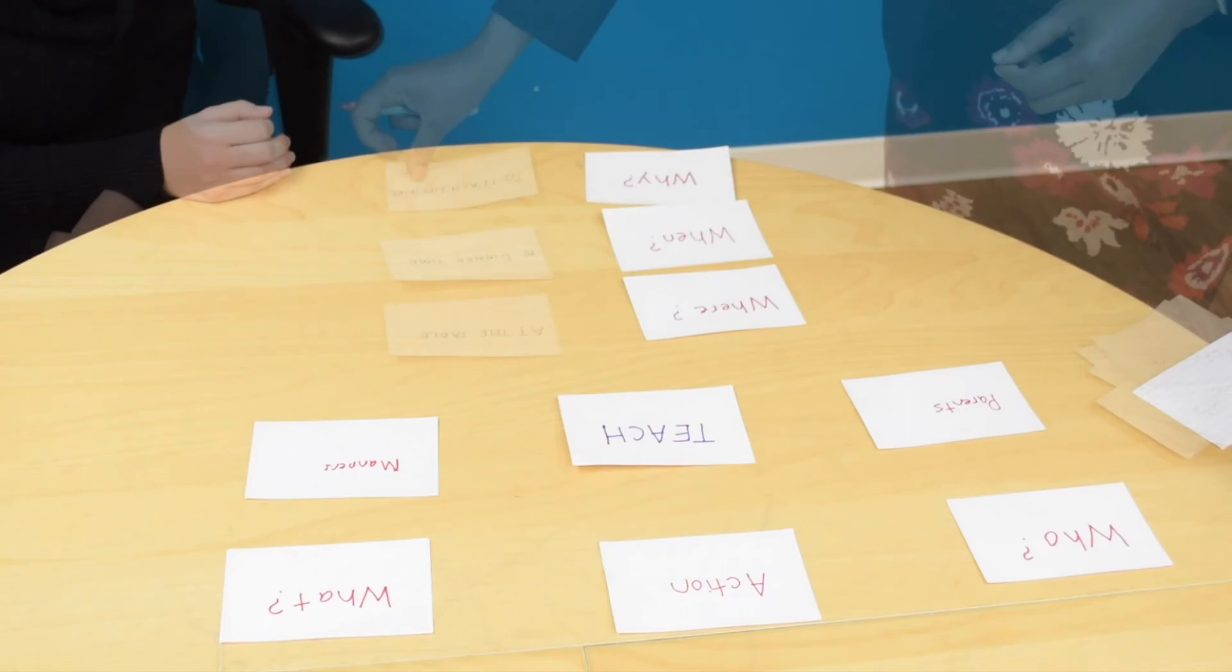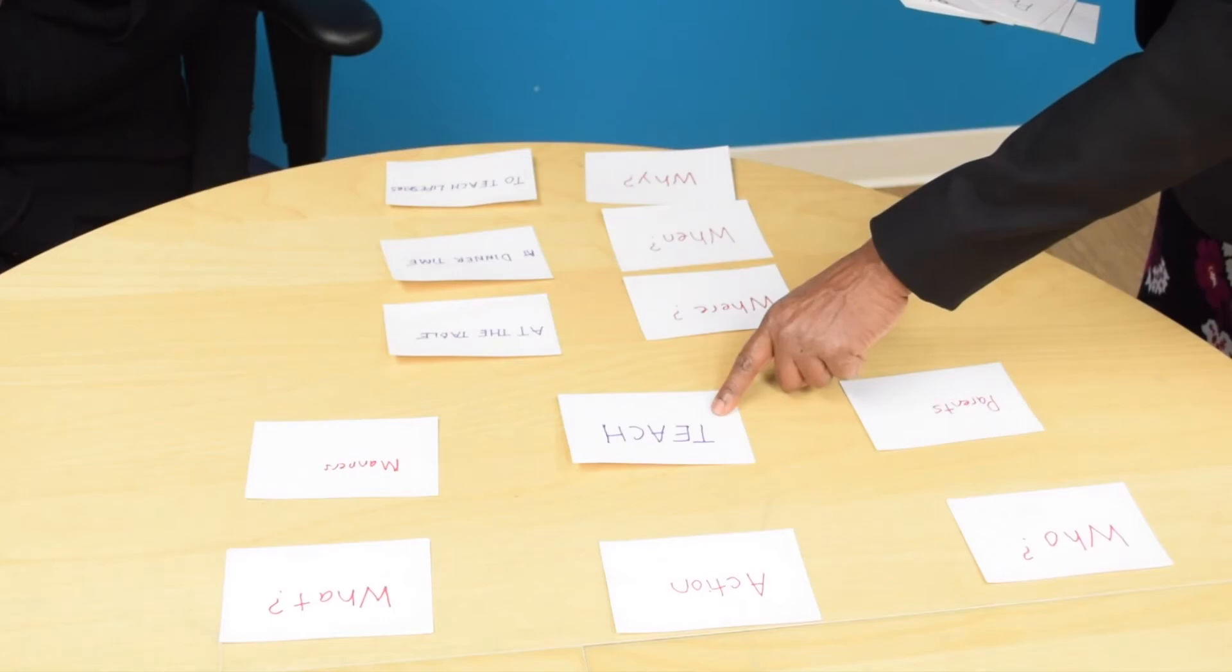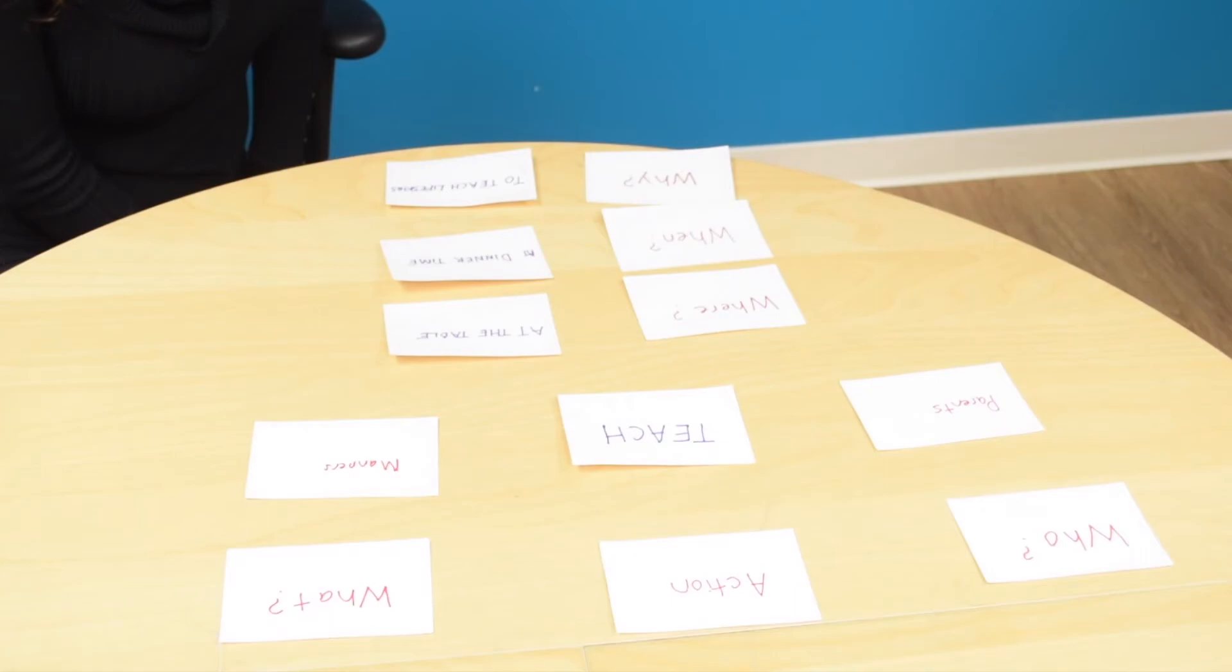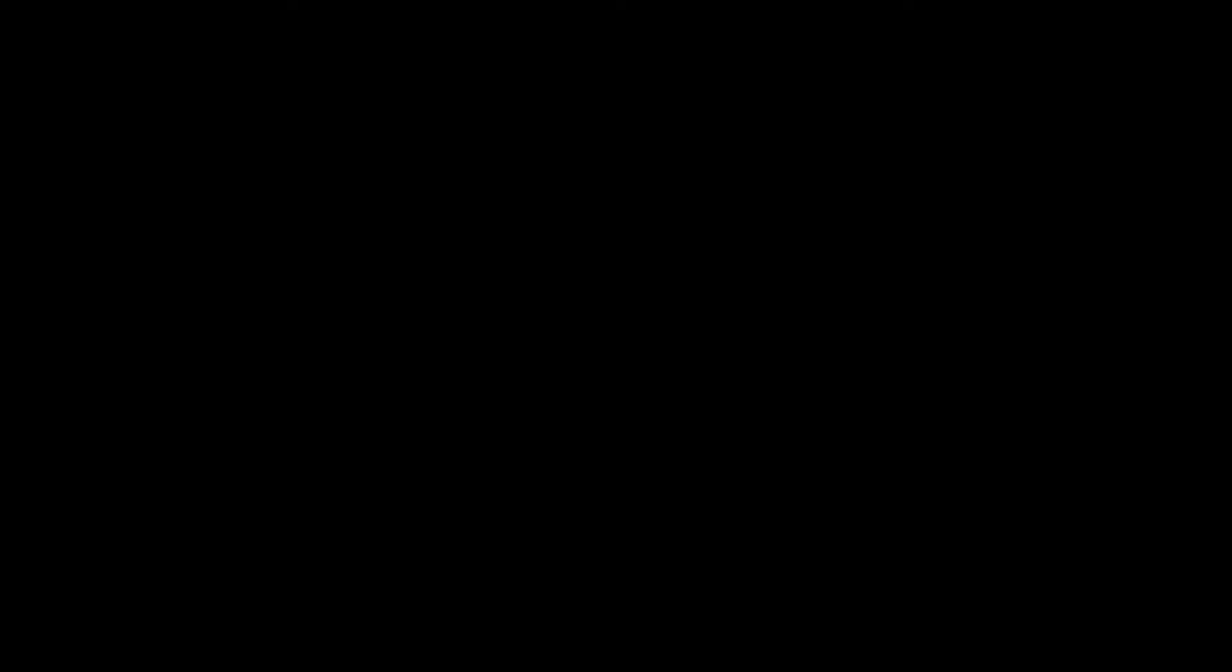I would like you to read the entire sentence starting with where we began. Parents teach manners. Then just go right down this column. Parents teach manners at the table. Parents teach manners at dinner time. Parents teach manners to teach life skills. Thank you very much.